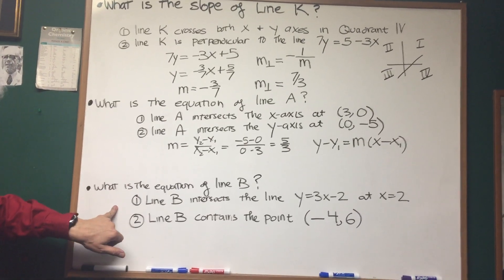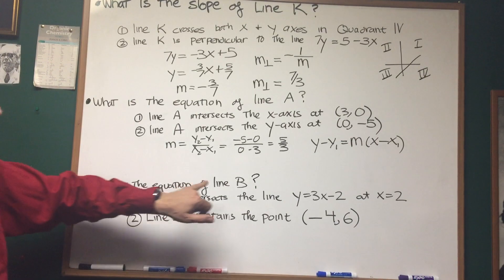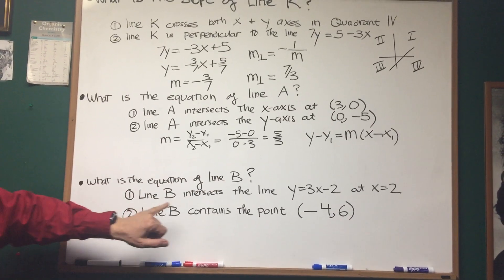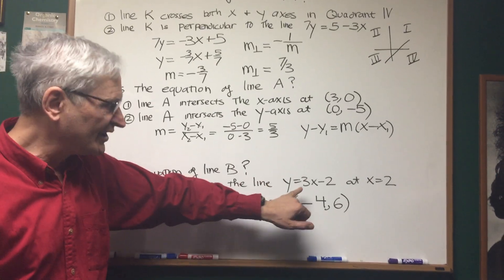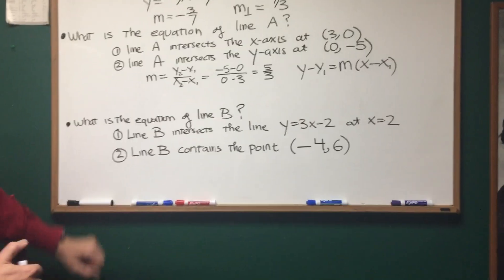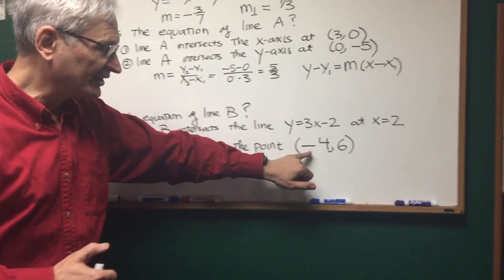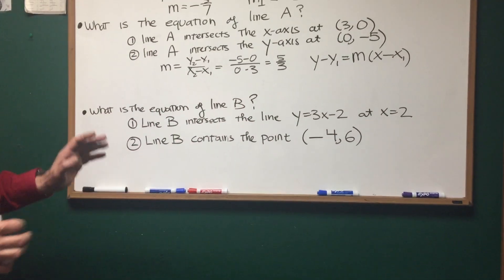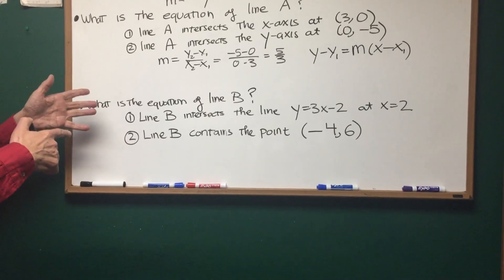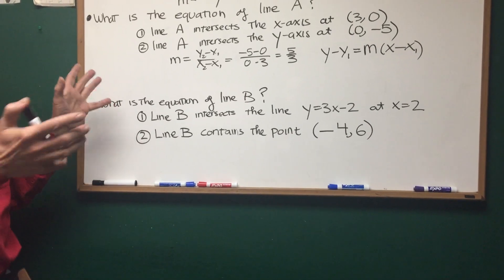Now let's go to this third equation. What is the equation of line B? Statement 1: Line B intersects the line y equals 3x minus 2 at x equals 2. Statement 2: Line B contains the point (-4,6). Now, if you look at this, neither one of these statements taken on its own is sufficient to answer the question.